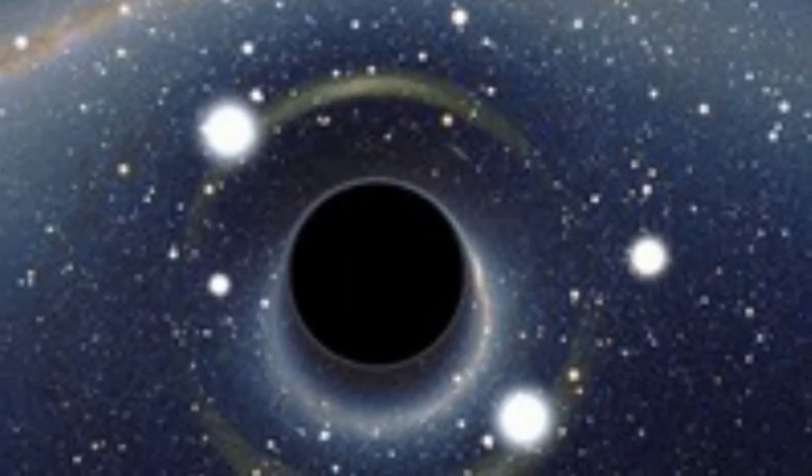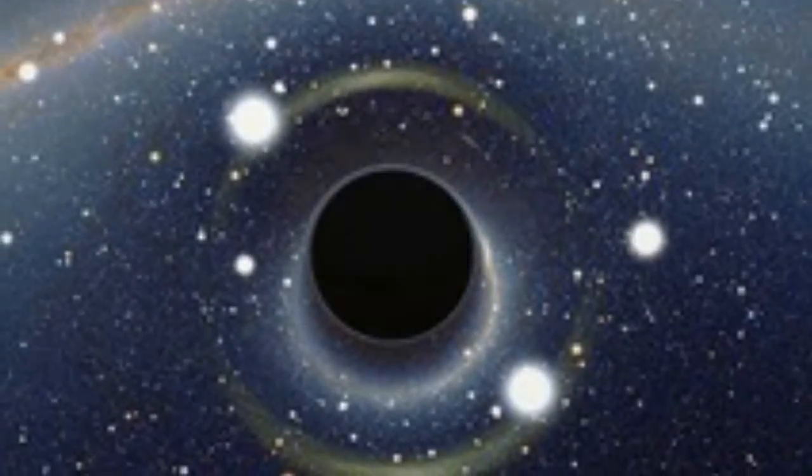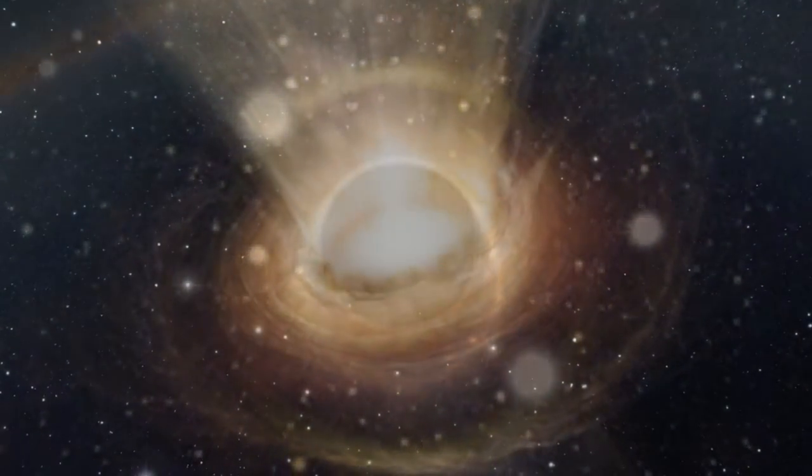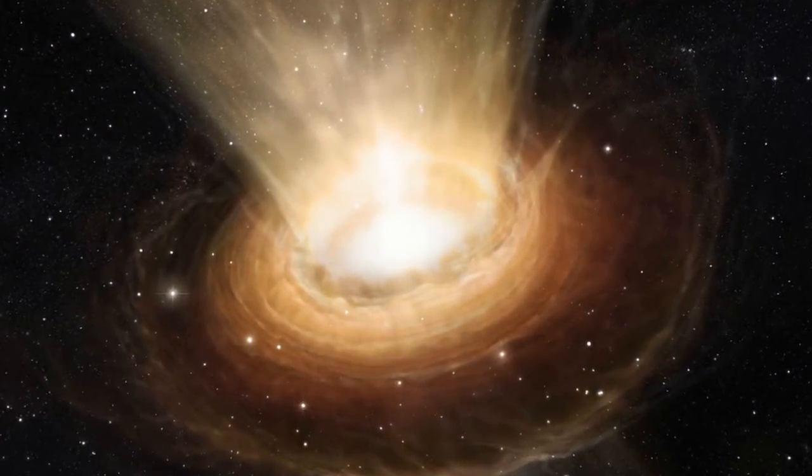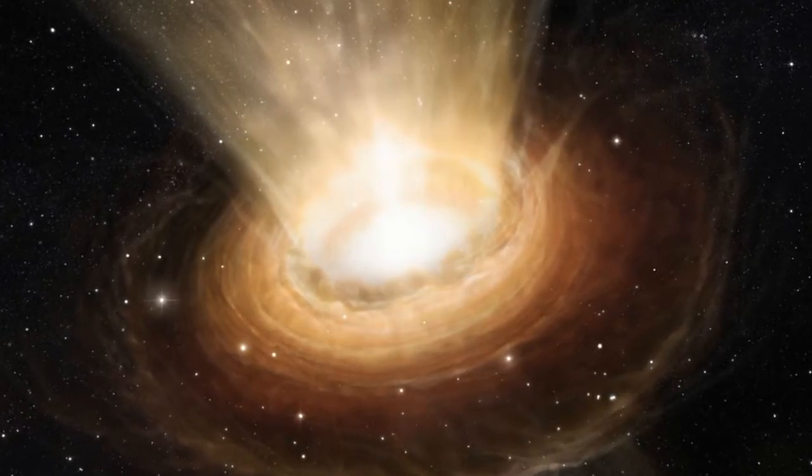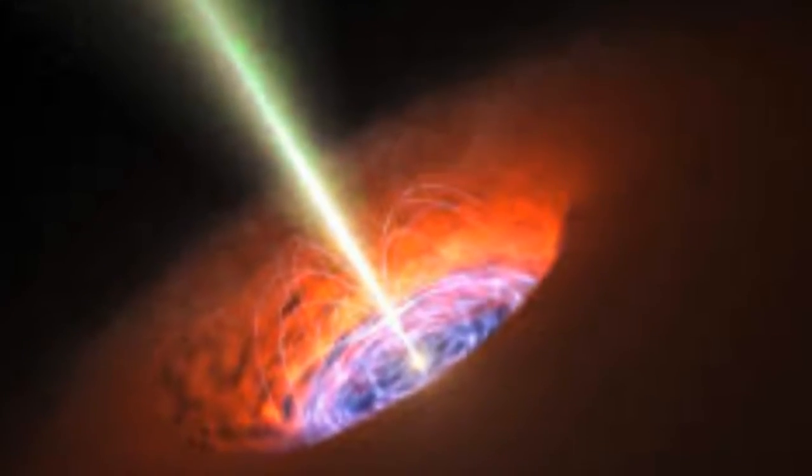This black hole, one of the largest ever seen, formed in the early universe about 11.7 billion years ago, 2 billion years after the Big Bang. The very fast motion of gas near the black hole suggests that it has a very high mass, the equivalent of about 7 billion suns. The discovery was unexpected.